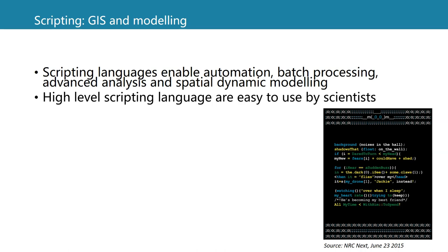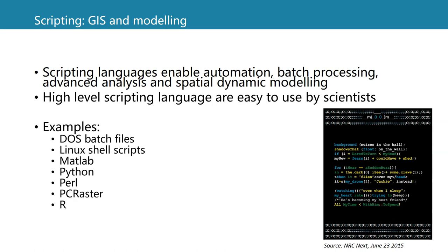Here are some examples of high-level scripting languages. We can use batch files in DOS or shell scripts in Linux to automate procedures. Many engineers learn how to use MATLAB or Python for their processes. Later in this course, you will learn Python. There are also other examples like Perl, and you will later also learn PC Raster, which can be used for map algebra and dynamic modeling. R is also a very useful scripting language.